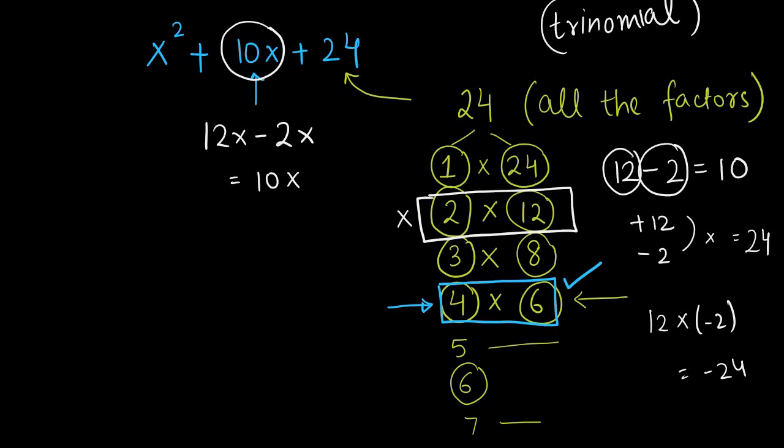Next step would be x². Then I need to split this term now. Then write plus 24 as it is. Now split that middle term in form of 6x plus 4x. Now make a pair here. Make a pair here.